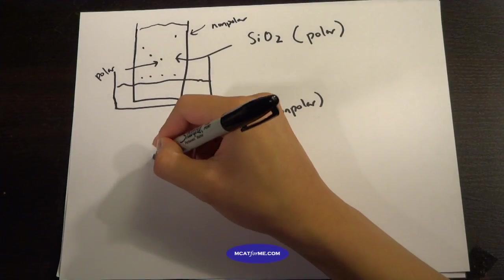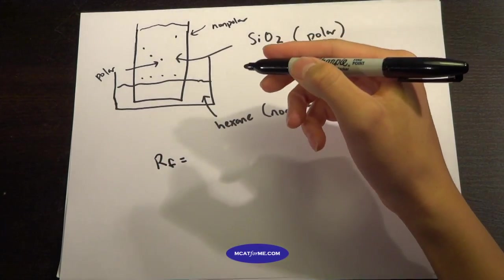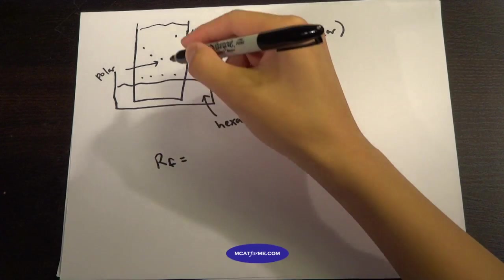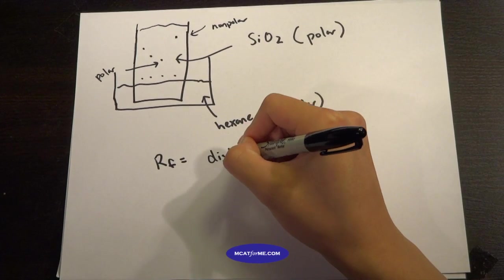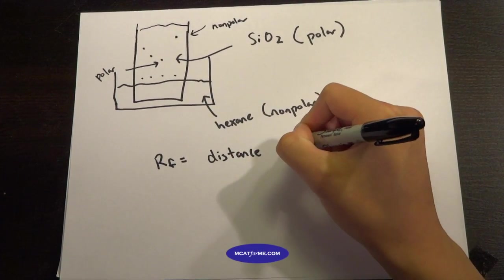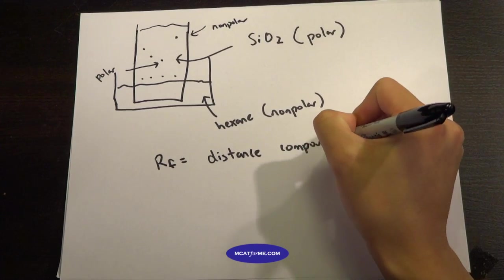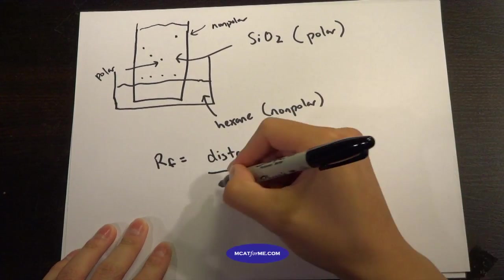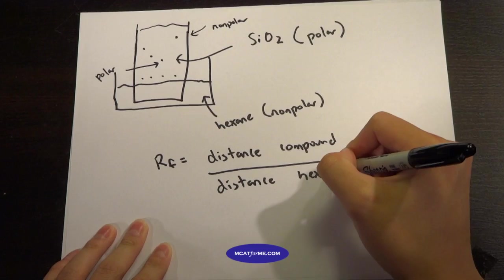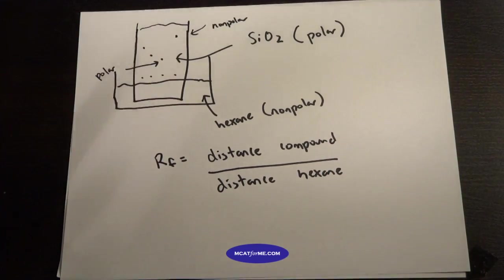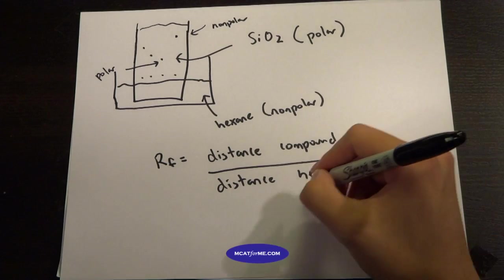And so what is this RF value? This RF value is the distance that this compound travels, so the distance the compound goes, over the distance that the hexane went. So the hexane went all the way to the very top. And then we took out the paper and we compared, so it's a ratio.